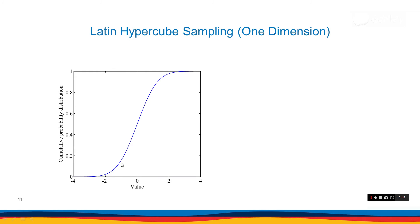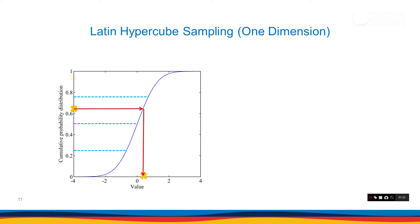Here is an example. Let's say we want to generate four samples. If we want to generate four samples, we need to have four stratifications. Eight samples, eight stratifications, and so on and so forth. After we are done with stratification, we need to choose one sample inside each stratification.